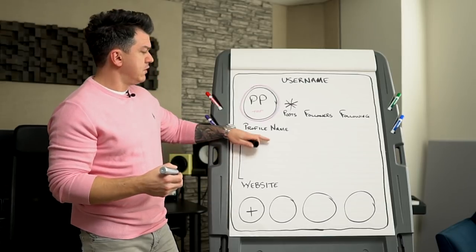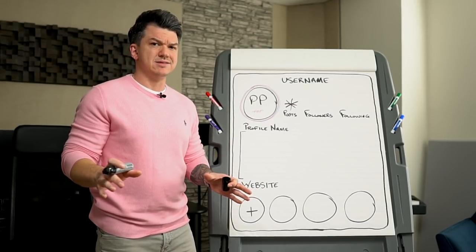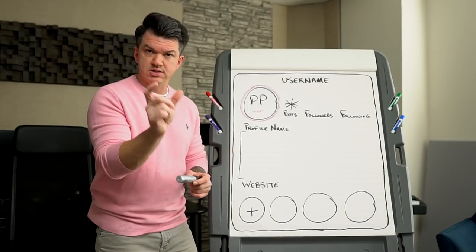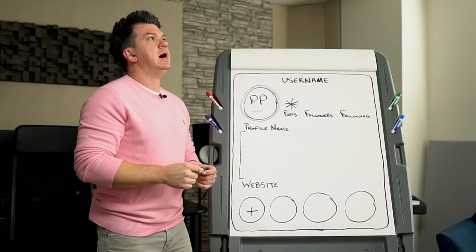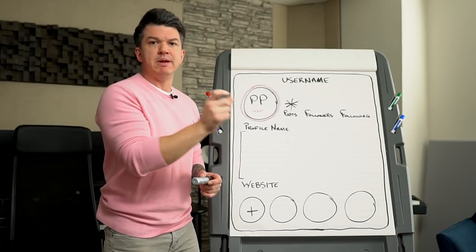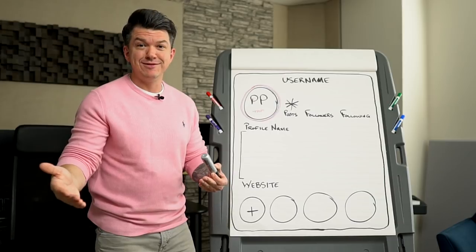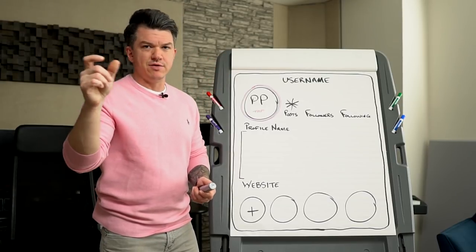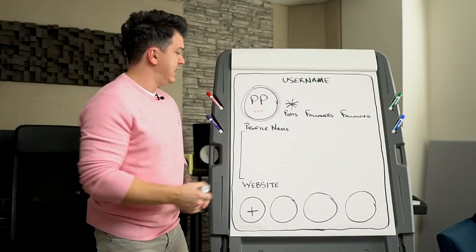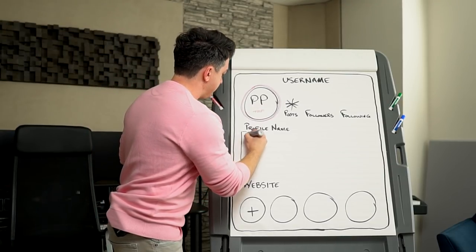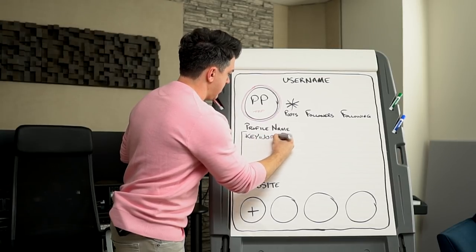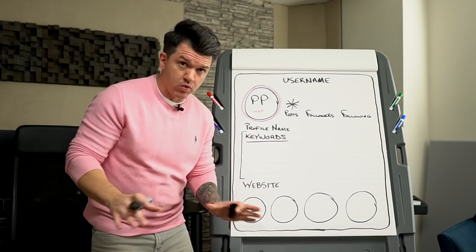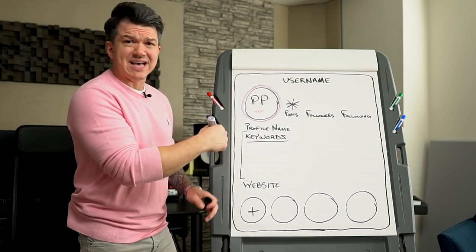What we need to do next is have this section right here full of a few things. Take notes. First and foremost, who are you? What do you do? I'm not talking about long-form sentences here. I'm talking about keywords, long tail keywords. What's a long tail keyword? A keyword would be producer, one word. A long tail keyword would be a hip-hop producer, trap and urban producer, something like that. You can also go in and do hashtags here, but I don't recommend doing a ton of hashtags.